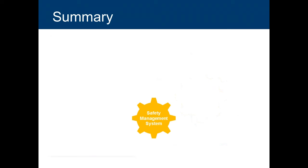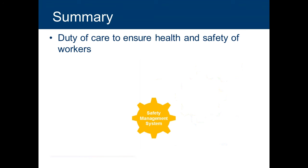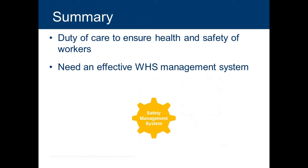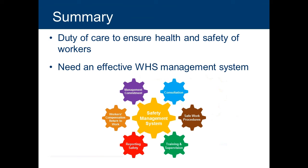In summary, under work health and safety legislation, employers have a duty of care to ensure the health and safety of all workers. You can show that you're compliant with the legislation by having an effective health and safety management system. The essential elements we've covered in this webinar include management commitment, consultation, managing hazards and safe work procedures, training and supervision, reporting safety, and workers' compensation and return to work. It's important that you monitor, review and continually improve your safety management system to ensure it remains effective, and make sure it meets the needs of your workplace — including the size of your business, the type of work you do, and the people who work for you.